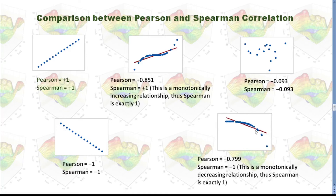In this case, because it is not a linear relationship, Pearson will be negative 0.799, and Spearman is negative 1, because this is a monotonically decreasing relationship.